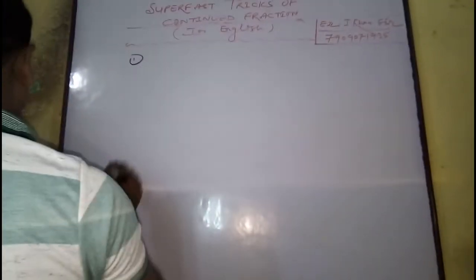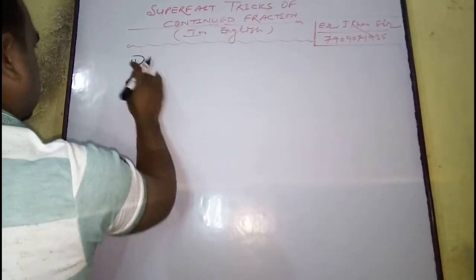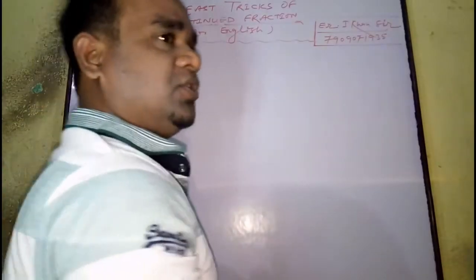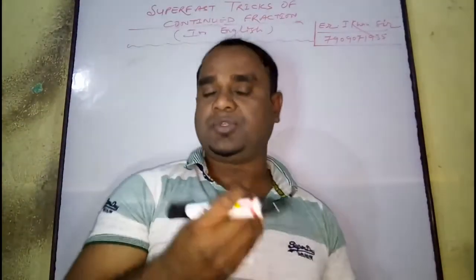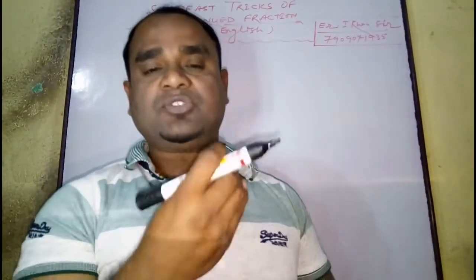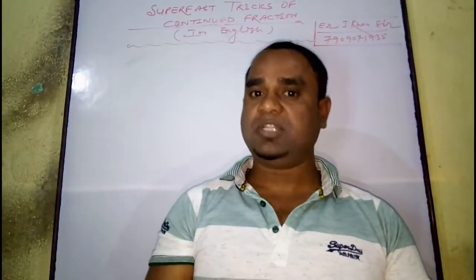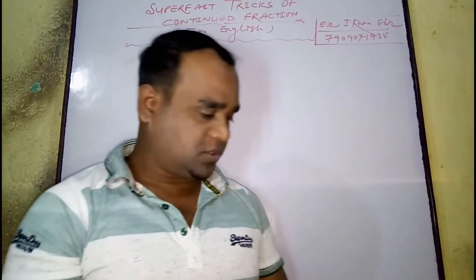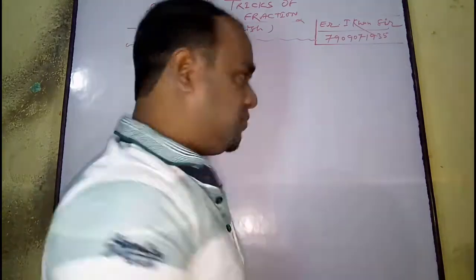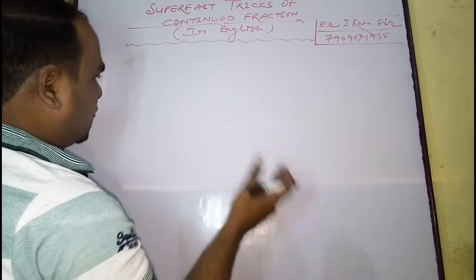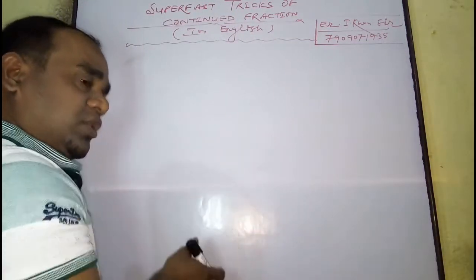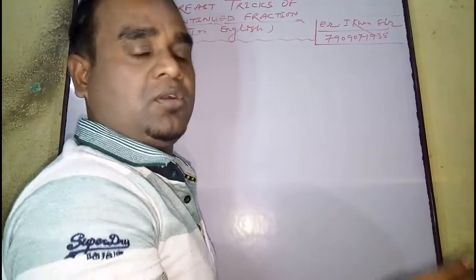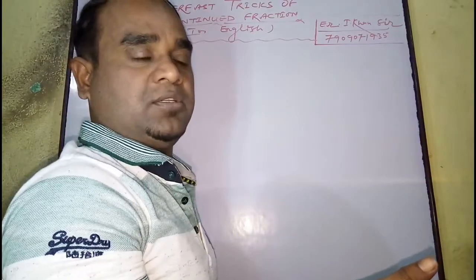Friends, suppose you have to solve — but first of all, we must know what is a continued fraction. Whenever several fractions come together, that is called a continued fraction.